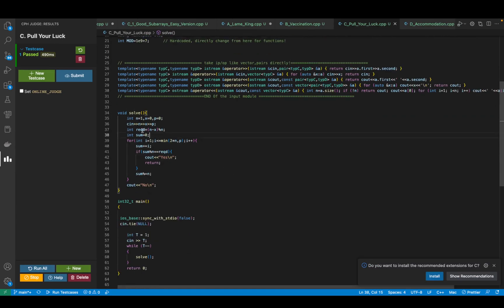So in the code, firstly I am taking the required. So what is required? Required is basically n minus x modulus n. Then the current sum is set to 0. In each of these iterations I will increase the sum, I will check if my sum mod n is equal to the required. If that's the case print yes and return, if that's not the case keep continuing.